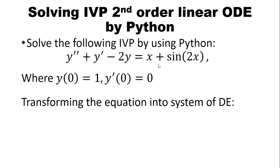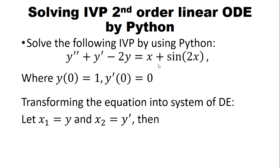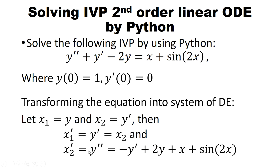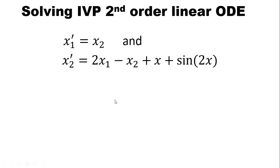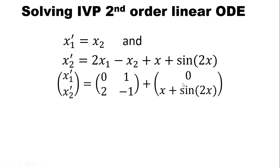To solve this second-order linear differential equation, we transform it into a system of equations. We let X1 represent Y and X2 represent Y'. Taking derivatives, X1' = Y' and X2' = Y''. We substitute Y'' from the original equation, giving us the system: X1' = X2 and X2' = 2X1 - X2 + X + sin(2X). This can also be written in matrix form.